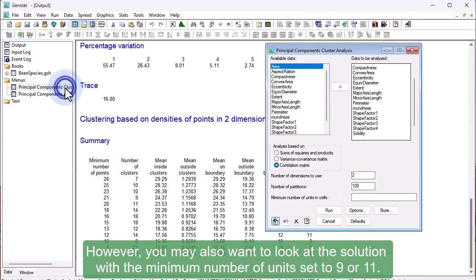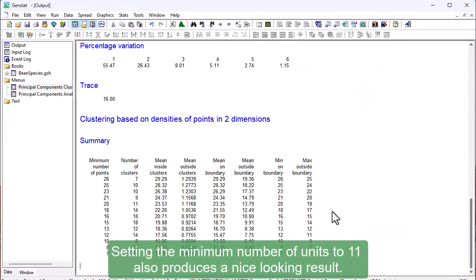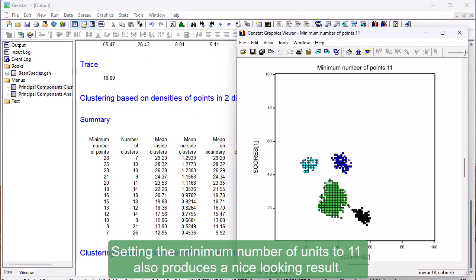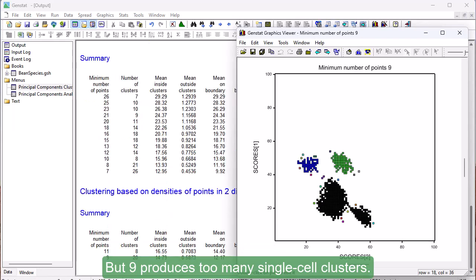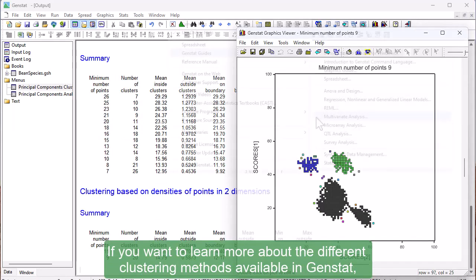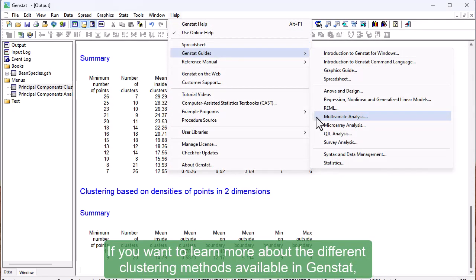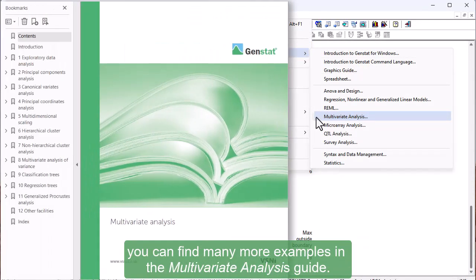However, you may also want to look at the solution with the minimum number of units set to 9 or 11. Setting the minimum number of units to 11 also produces a nice-looking result, but 9 produces too many single-cell clusters. If you want to learn more about the different clustering methods available in Genestat, you can find many more examples in the multivariate analysis guide.